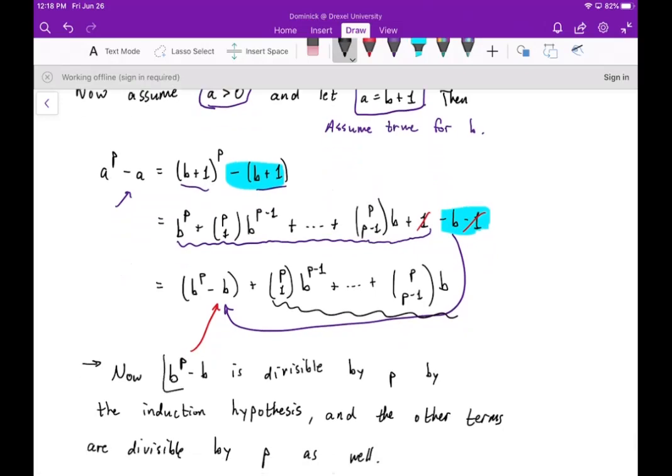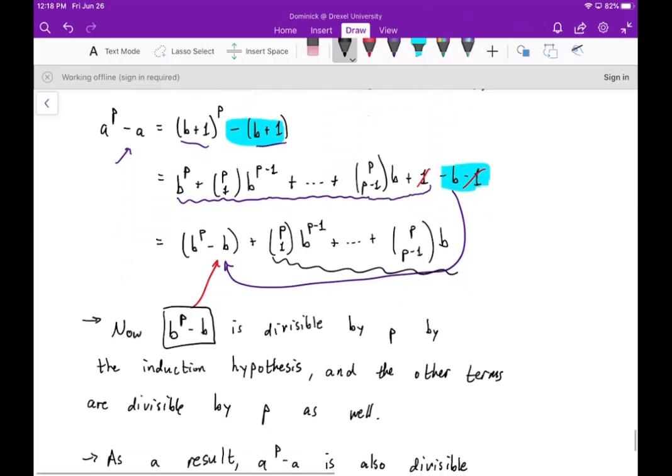So then we get all these binomial coefficients here, and then B to the P minus B. Now, we know that B to the P minus B is divisible by P from the induction hypothesis, because we're assuming that it's true for B.